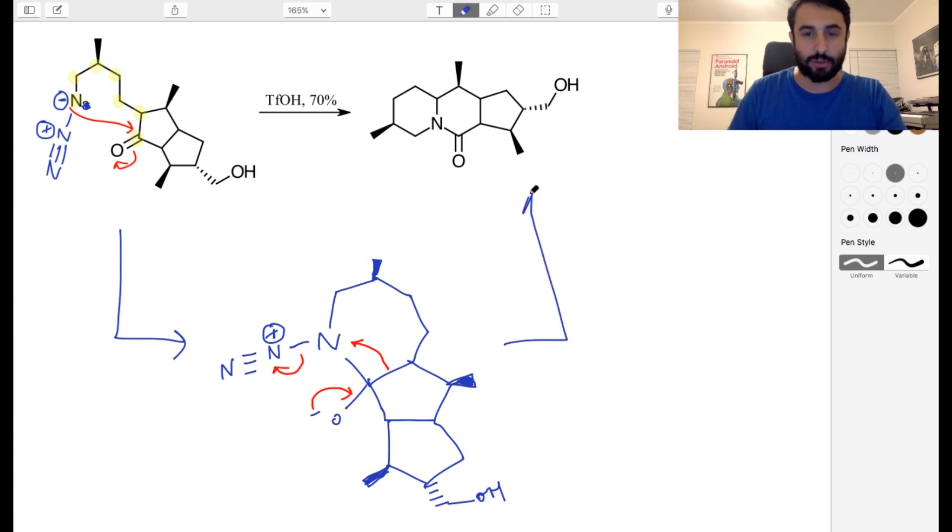And the reason that this is thermodynamically favorable is that this can then kick that off. And we are going to go straight to the product, losing nitrogen gas. So nitrogen gas is lost. And look at what we've done. We have made this ring one carbon smaller, and we have made one unit smaller, I should say. And then this ring has become one atom larger. So the seven-membered ring has condensed, and the five-membered ring has expanded.